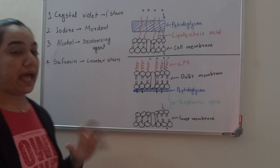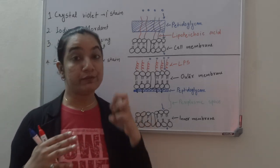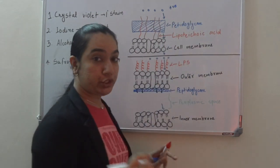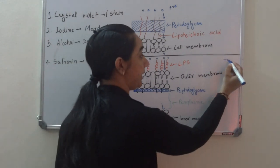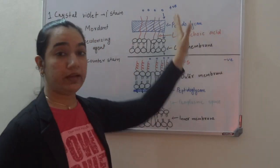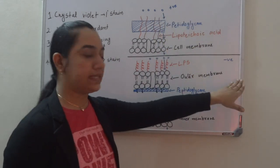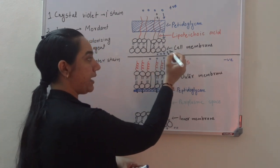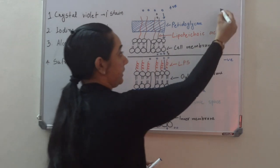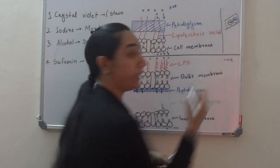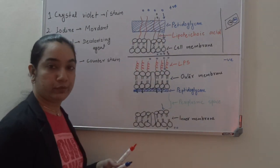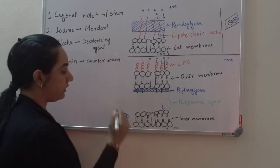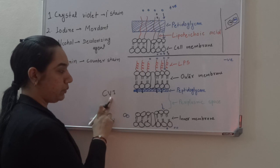Next we add iodine, which acts as a mordant — something that fixes the dye in the cell. Crystal violet is a positively charged molecule, whereas iodine is negatively charged. So iodine passes through the cell wall and cell membrane and forms a complex with crystal violet. The resultant complex is larger in size than either molecule individually. This happens in both gram positive and gram negative bacteria. This complex is called the CVI complex — the crystal violet iodine complex.